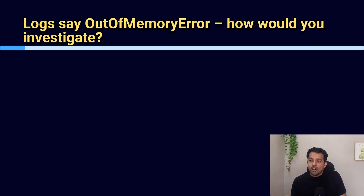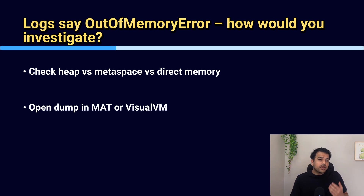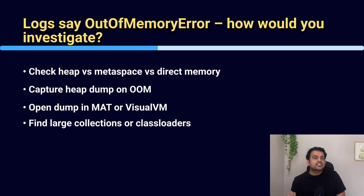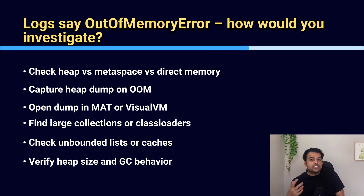Our first question is: logs say out of memory error — how would you investigate? You can say that first check where the memory is going: heap, metaspace, or direct memory. Then capture a heap dump and open it in a tool like Eclipse MAT or VisualVM. Look for large collections, class loaders, or objects retaining too much memory. Check recent code changes for unbounded lists, maps, or caching. Also verify JVM heap size, GC behavior, and memory trends from monitoring tools.